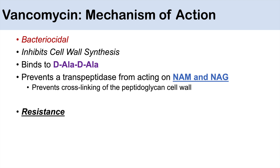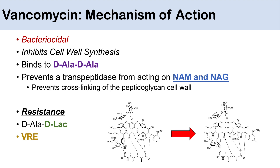Because vancomycin binds to D-Ala-D-Ala, certain bacteria can form resistance by altering this binding site — changing D-Ala-D-Ala to D-Ala-D-Lac. We see this in cases such as VRE, or vancomycin-resistant Enterococcus. In a normal susceptible bacterium with the D-Ala-D-Ala binding site, vancomycin binds forming five hydrogen bonds. But when a bacterium becomes resistant, it alters that site to D-Ala-D-Lac, and vancomycin can only form four hydrogen bonds. So the binding is less effective — this is how bacteria form resistance to vancomycin.